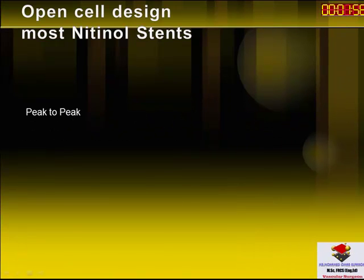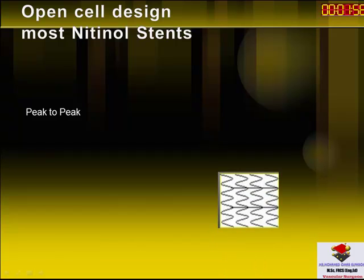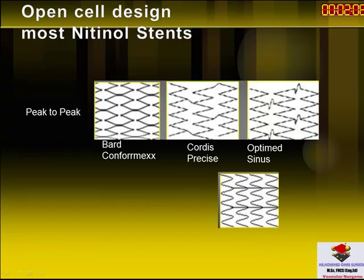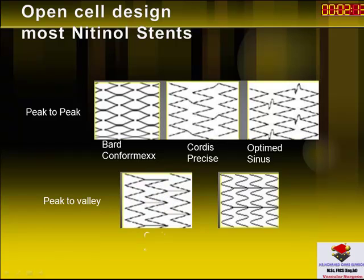In the open cell design, you can have either peak-to-peak or peak-to-valley configurations. The three famous examples of peak-to-peak are the Bard stent, Precise by Cordis, and Optimate by Sinus. You can also have peak-to-valley like the Zilver stent. We also have the drug-eluting Zilver PTX stent, and the AcuLink by Guidant, which is again peak-to-valley.